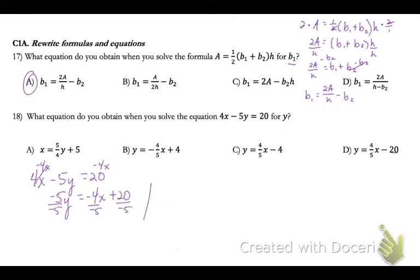Now I'm going to divide each side by negative 5. So y will equal positive 4 fifths x minus 4. And I put it in that form because I looked at my answer choices and saw that all of them, most of them, had the y equals and then the x first.